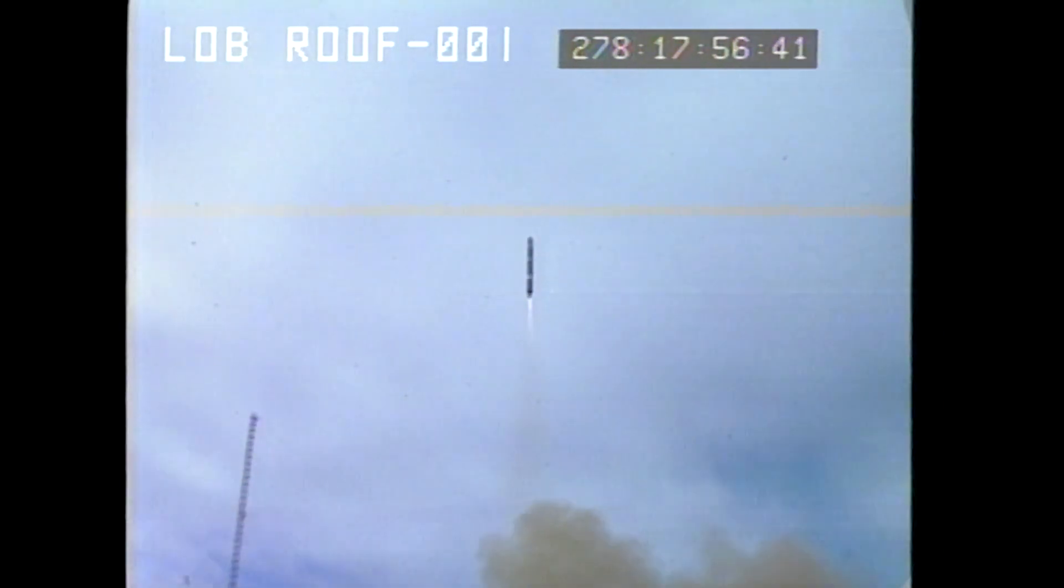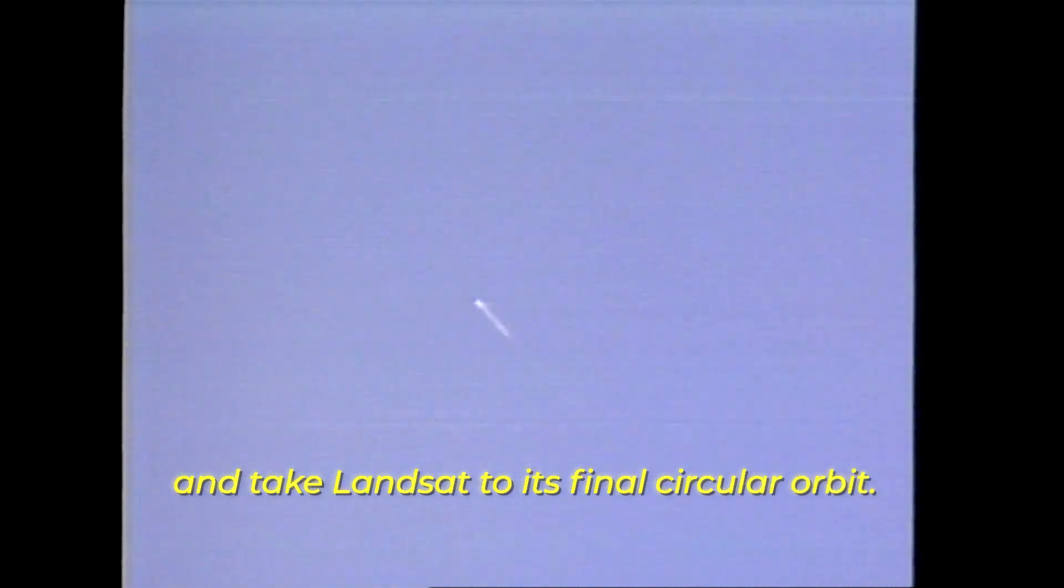Landsat 6 launched on October 5, 1993. Apogee kick motor should ignite right now and take Landsat to its final circular orbit. But it never made it to orbit.